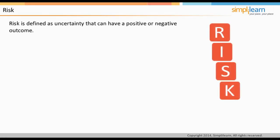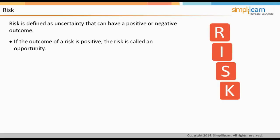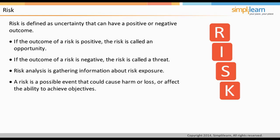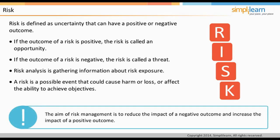Risk is defined as uncertainty that can have a positive or negative outcome. If the outcome is positive, it helps fulfill business objectives — such risks are called opportunities. If the outcome is negative, it is called a threat. Managing risk requires identification and control of exposures to risk that may impact achieving business objectives. There are two distinct phases: risk analysis, which involves gathering information about risk exposure so the organization can make timely decisions; and risk management, which aims to reduce the impact of negative outcomes and increase the impact of positive ones.